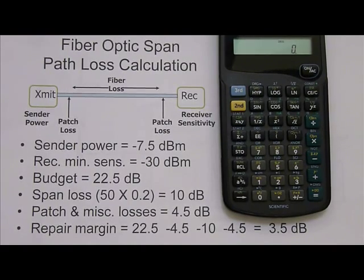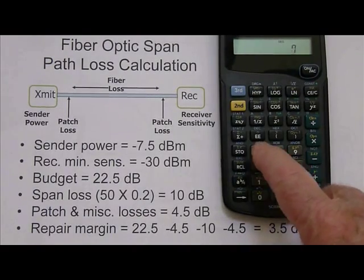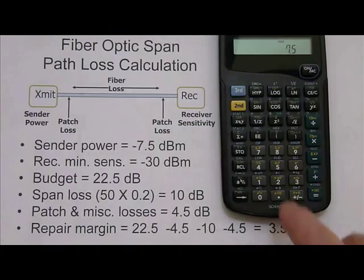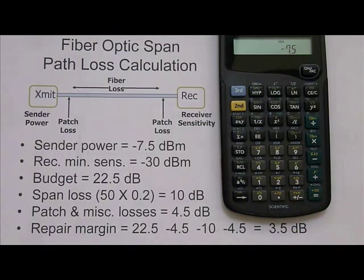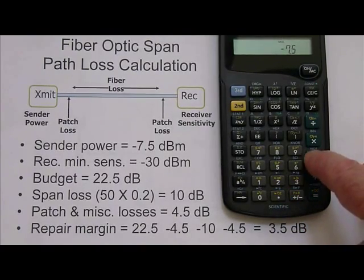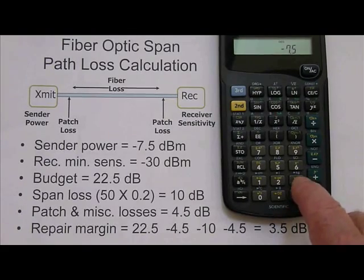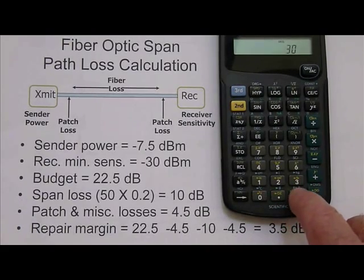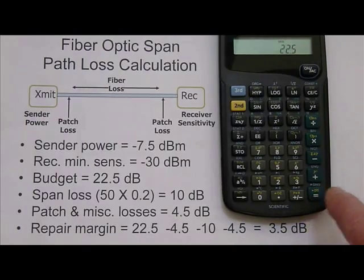So the way to calculate this is to begin by entering 7.5 and changing its sign to make it negative. We're now going to subtract and we're going to enter 30 and again change its sign and hit equals, and we discover we have a budget, a loss budget, of 22.5 dB.